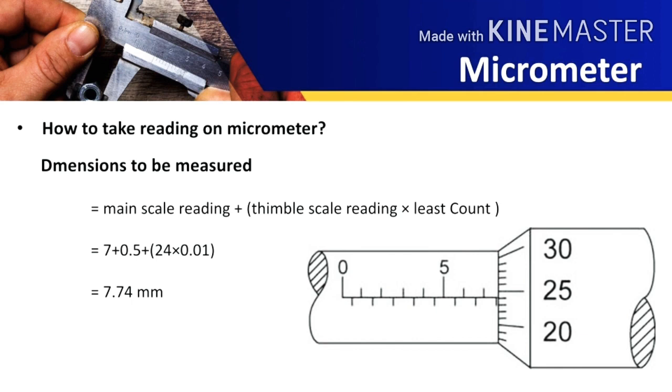So the dimension to be measured is equal to main scale reading plus thimble scale reading times least count. Put the values in the formula as we can see in this image. Main scale reading is 7.5 and the thimble scale reading is 24. And the least count we have calculated is 0.01. So the dimension to be measured is 7.74 mm.